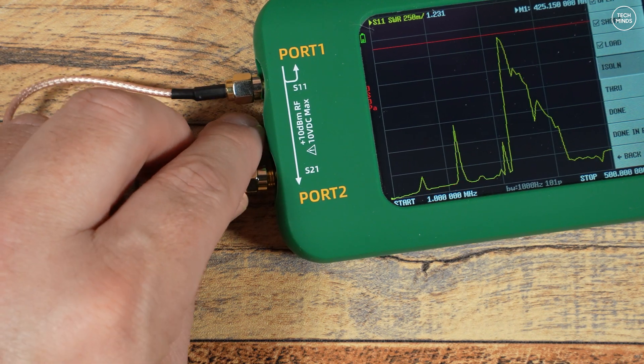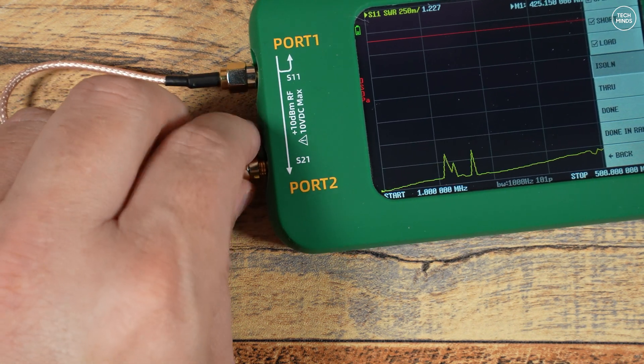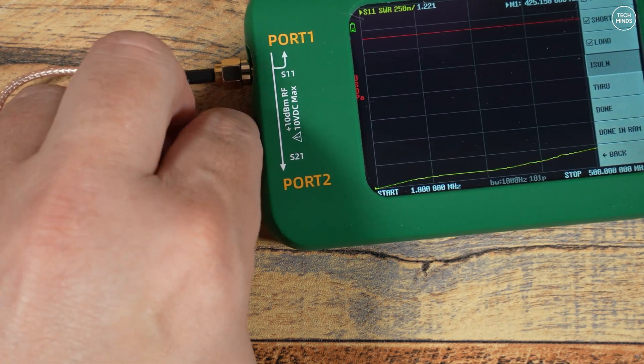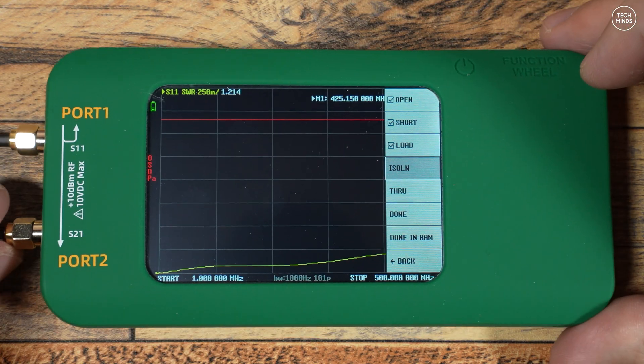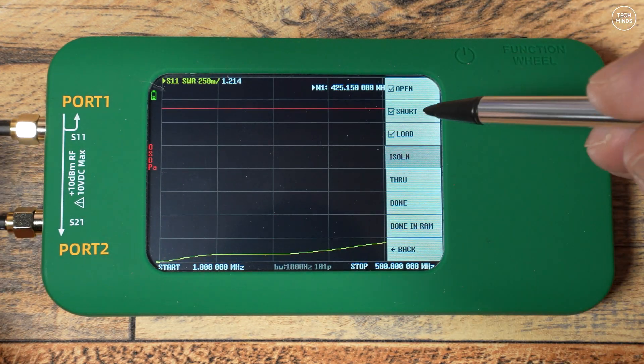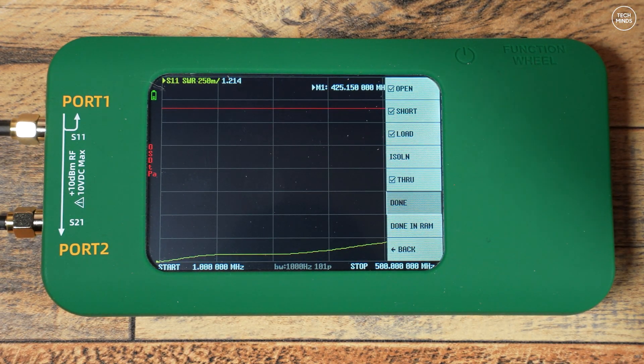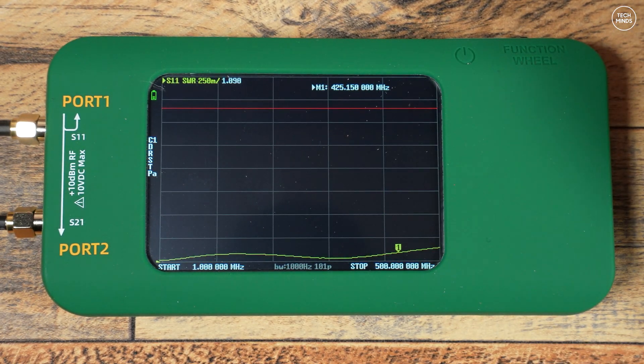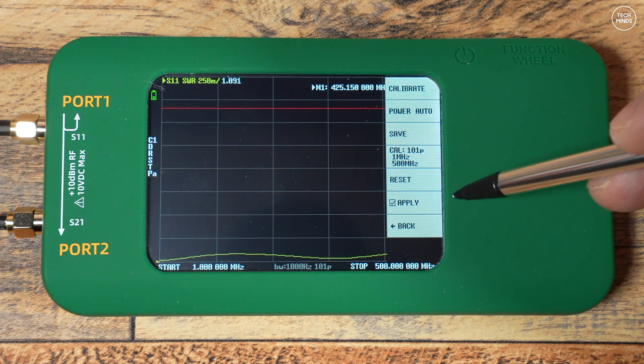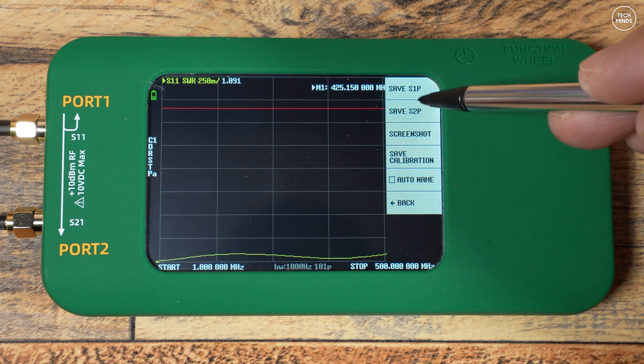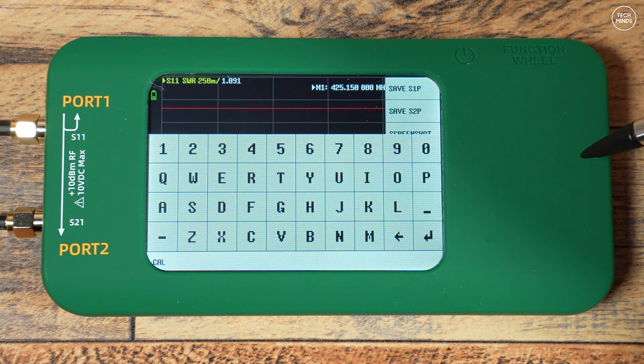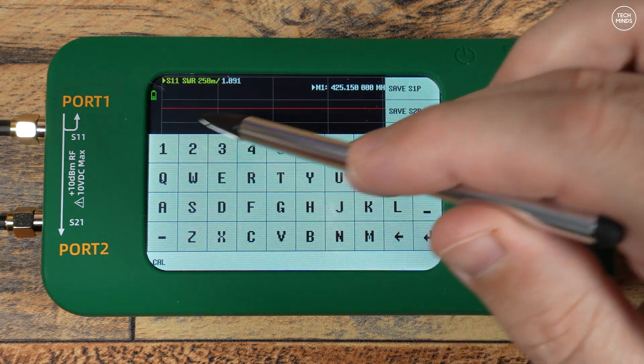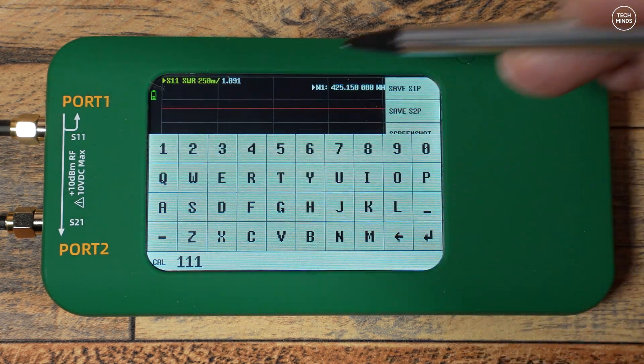Lastly we need to do the through calibration which requires one of the SMA patch cables to go between S11 and S21 ports. If you wanted to calibrate to test another device like a bandpass filter, then simply attach both those SMA patch cables and then use the included adapter between the SMA patch cables before pressing the through button. You'd also need to perform the same calibration with one of the SMA patch cables attached for open, short, and load. But for regular antenna testing you don't need to do that.